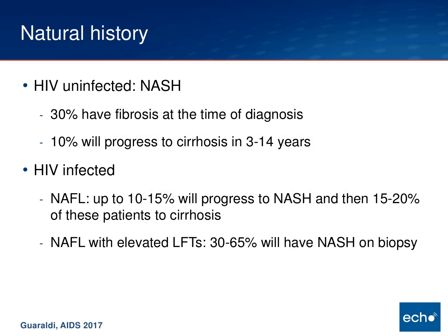A few points on natural history: among HIV-infected patients who have NASH, 30% will have fibrosis at the time of diagnosis, and 10% will progress to cirrhosis over a span of 3 to 14 years. HIV-infected people who have fatty liver disease — up to 10 to 15% will progress to NASH, and then 15 to 20% of those with NASH will progress to cirrhosis. Those who have NAFL with elevated LFTs at the time of biopsy, 30 to 65% will have NASH on liver biopsy.